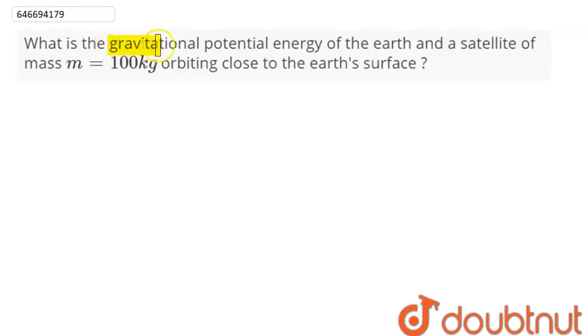The question is: what is the gravitational potential energy of the earth and a satellite of mass m = 100 kg orbiting close to the earth's surface?